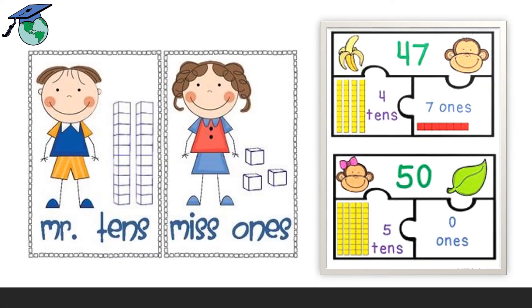Mr. Tens and Miss Ones. You can see over here there is a monkey and a banana. The monkey is having seven ones and the banana is having four tens. Now, we will have in the next place, the leaves and the monkey. The leaves is zero ones and the monkey is having the place of five tens.